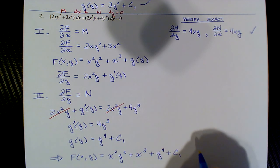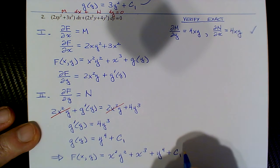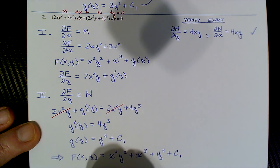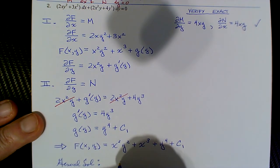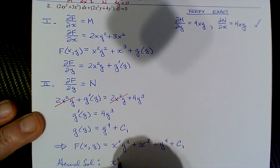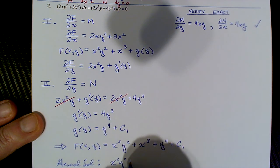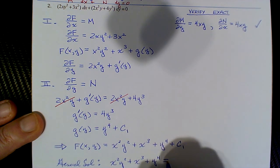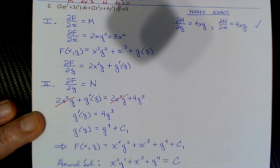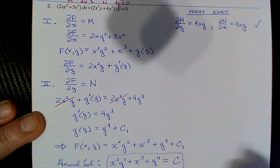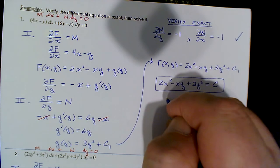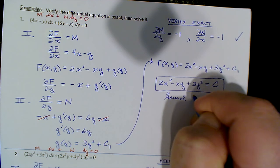And then for our general implicit solution: we take the variable parts x²y² + x³ + y⁴ and set it equal to some constant of integration C. That is the general solution for the second example.